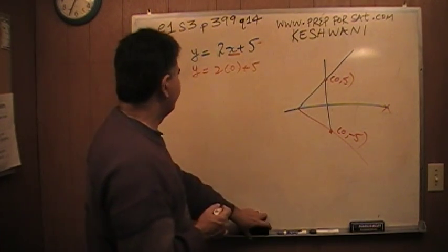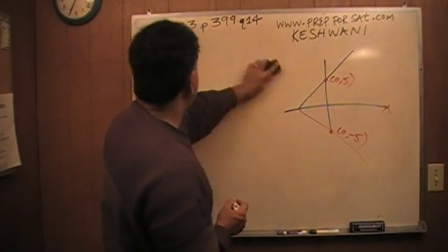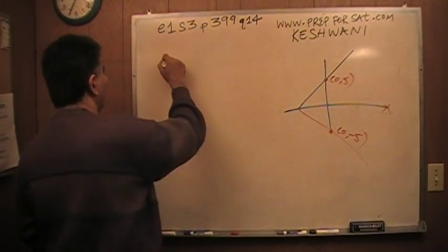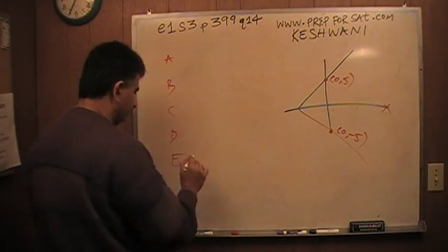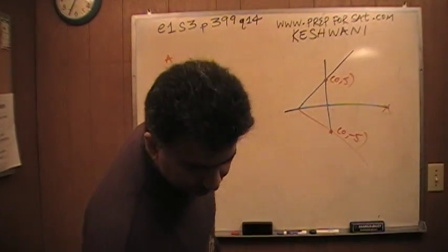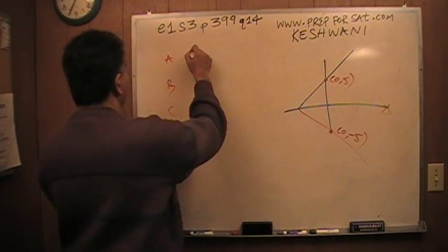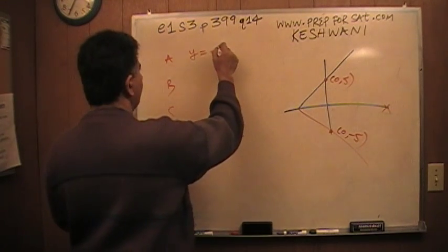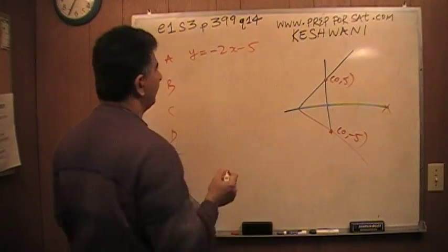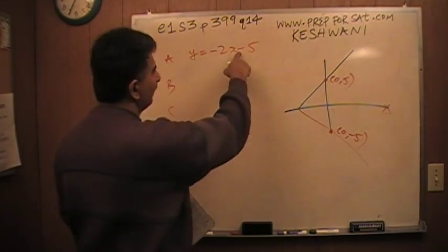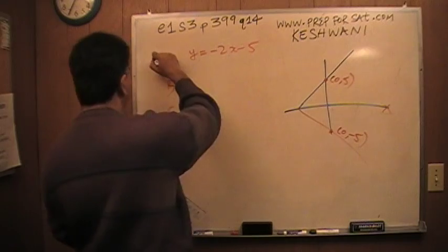y equals negative 2x minus 5. As you can see, we need negative 5. When x is 0, y has to be negative 5. So this one works.